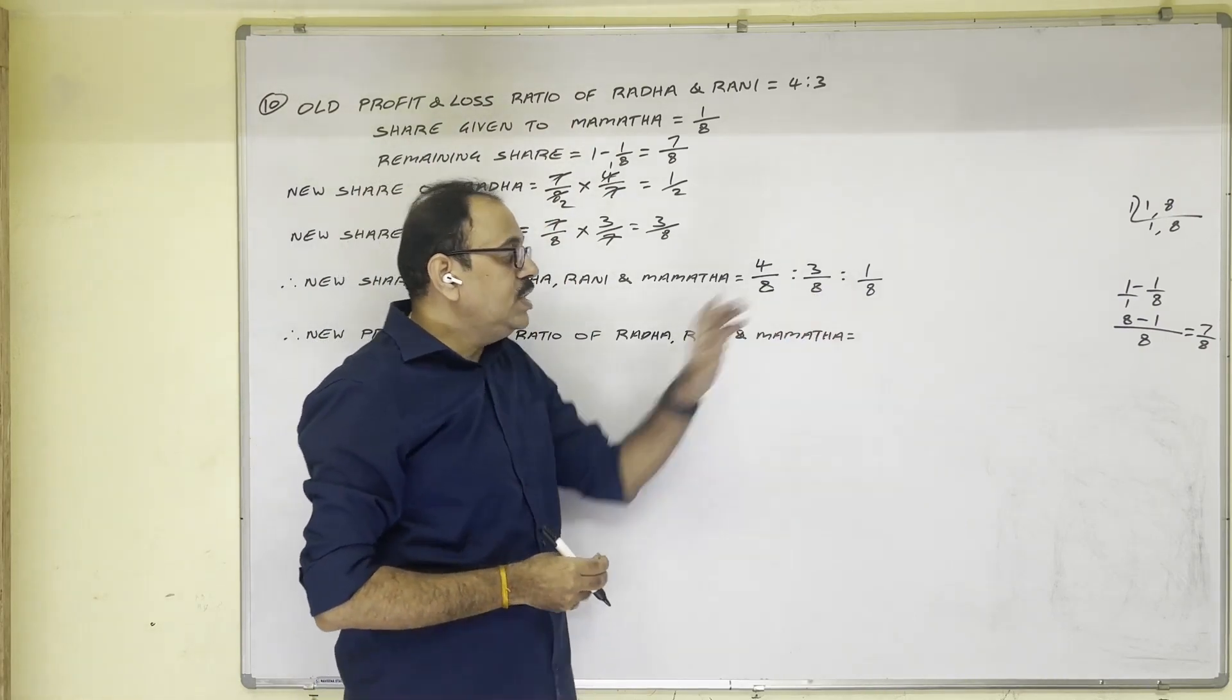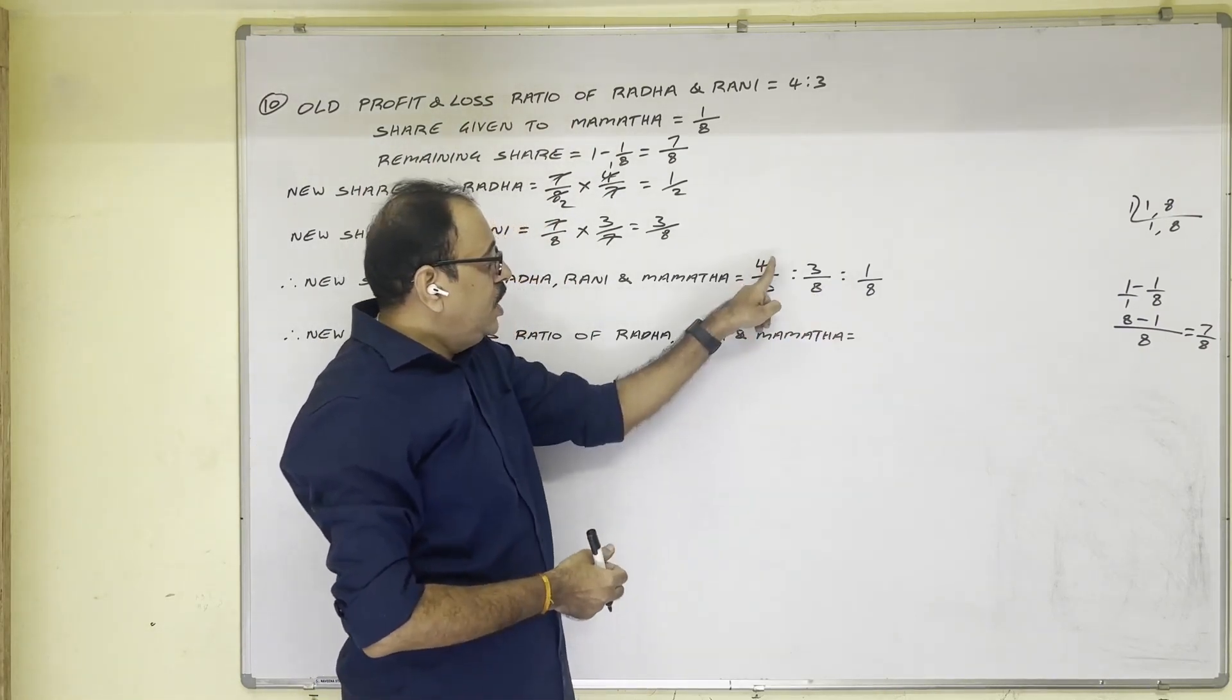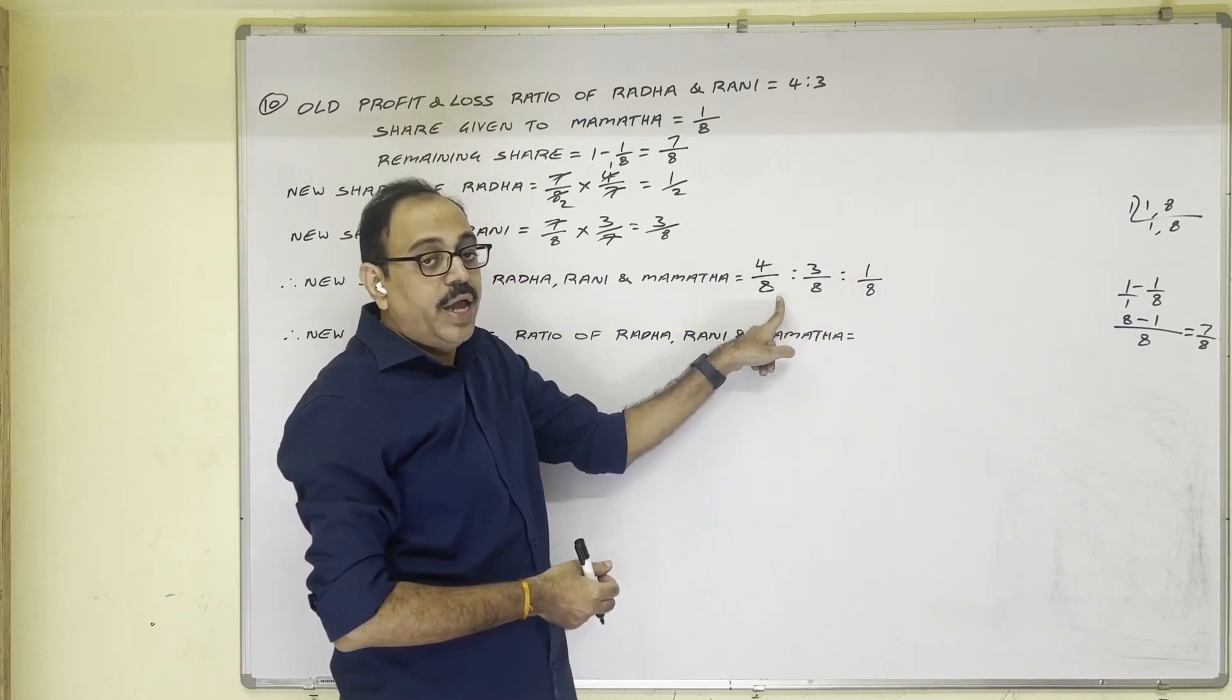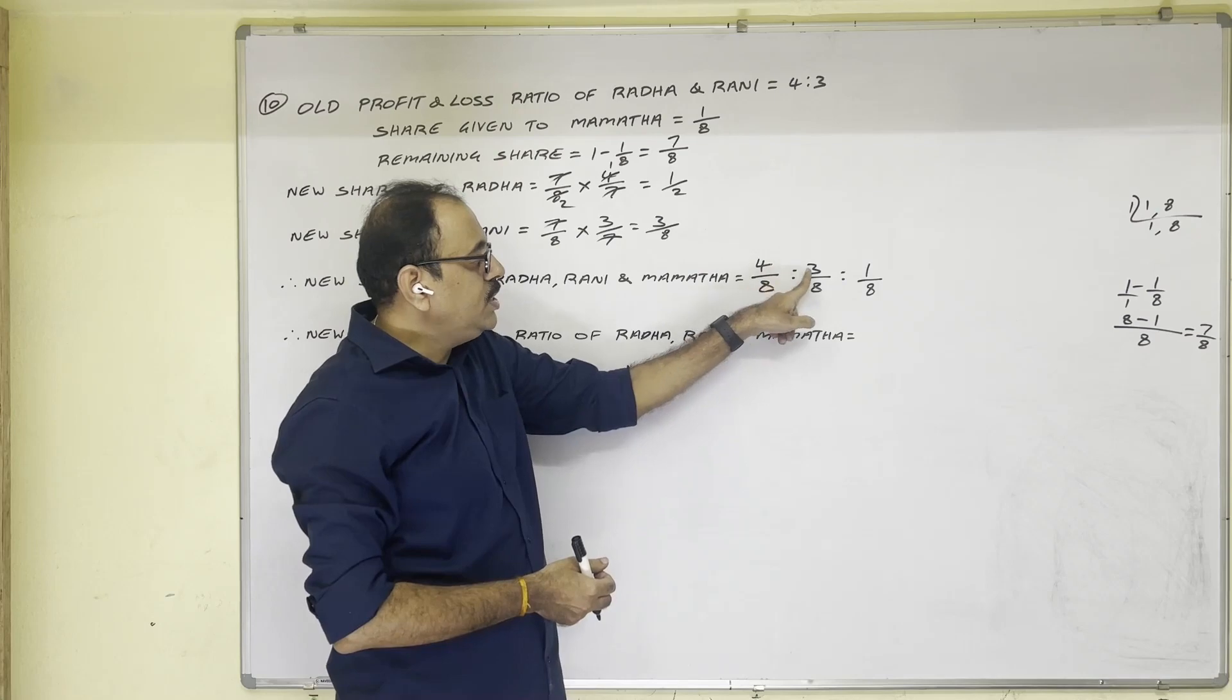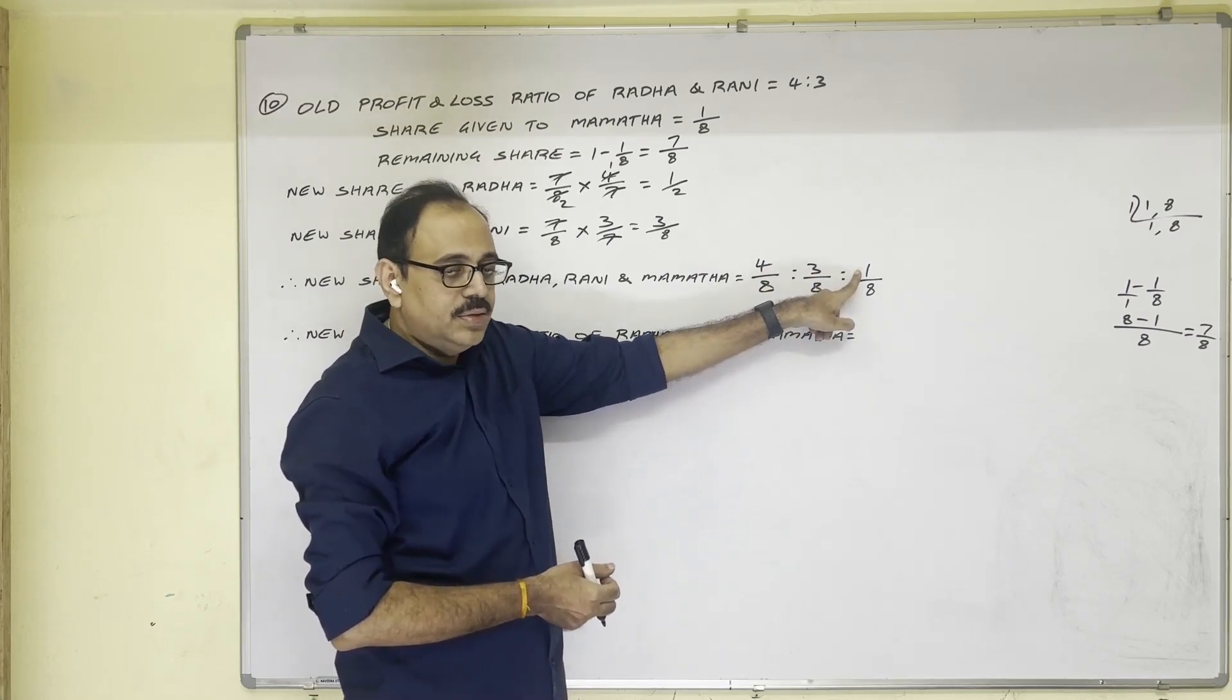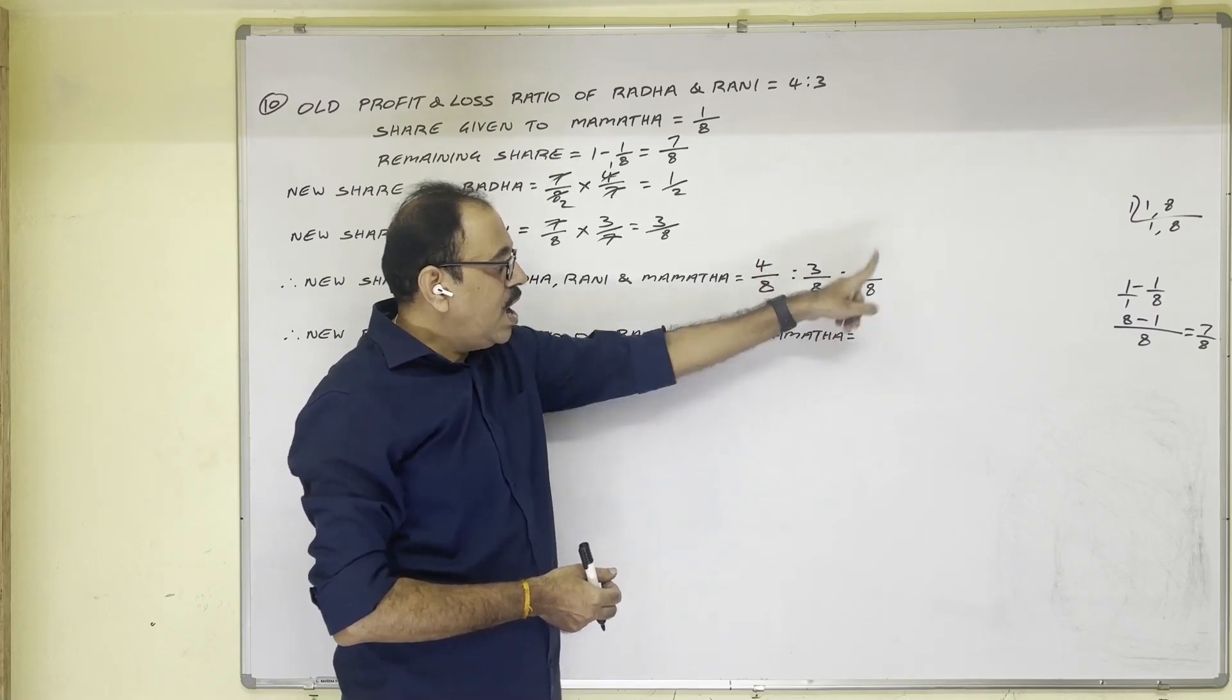How to know whether answer is correct or not? If you add these three numerators, denominator should come. Eight should come. Four plus three is seven, plus one is eight. So our answer is correct.